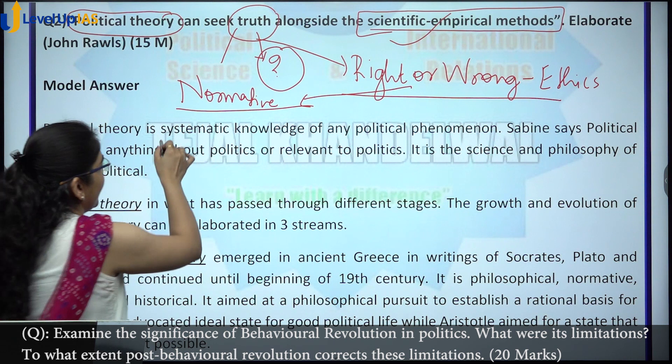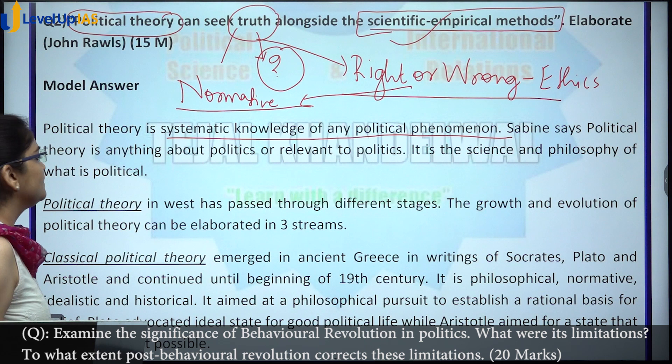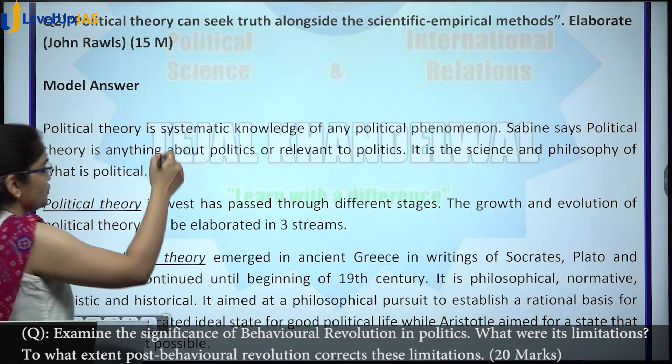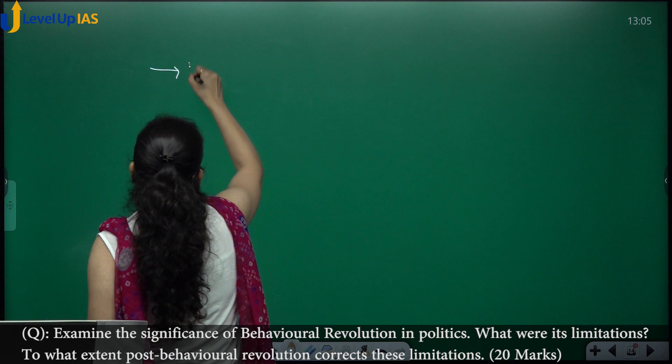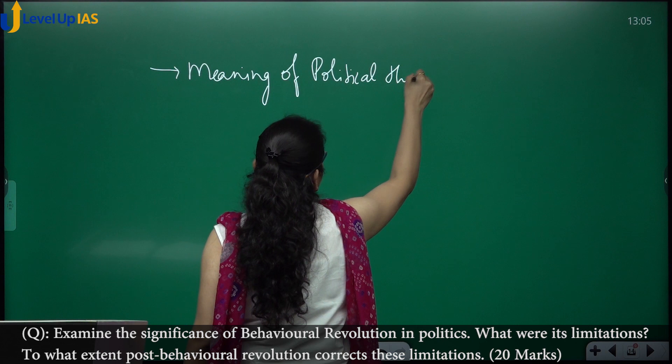Political theory is systematic knowledge of any political phenomena. Subarayan says political theory is anything about politics or relevant to politics — it is the science and philosophy of what is political. You should first have explained the meaning of political theory.